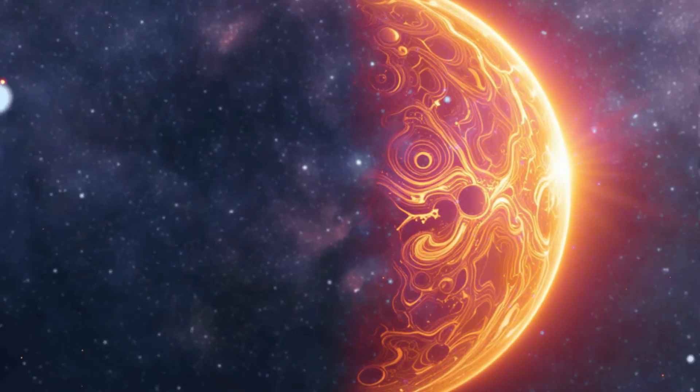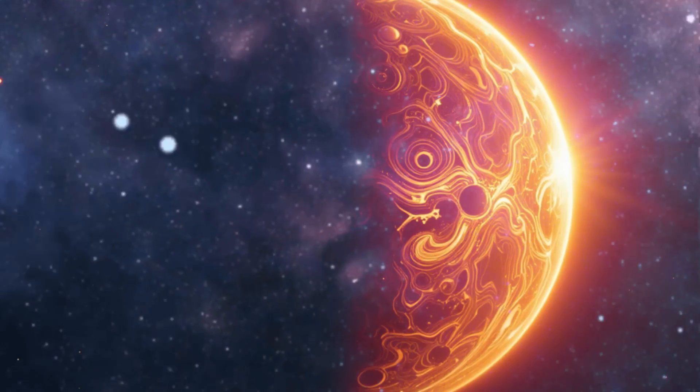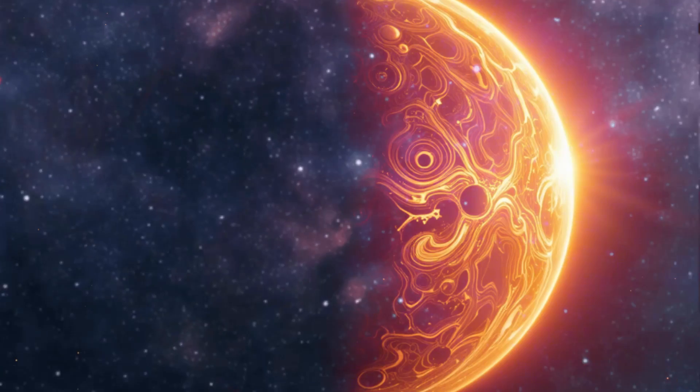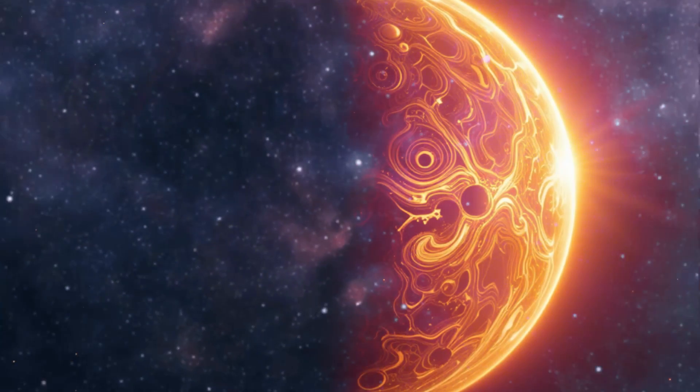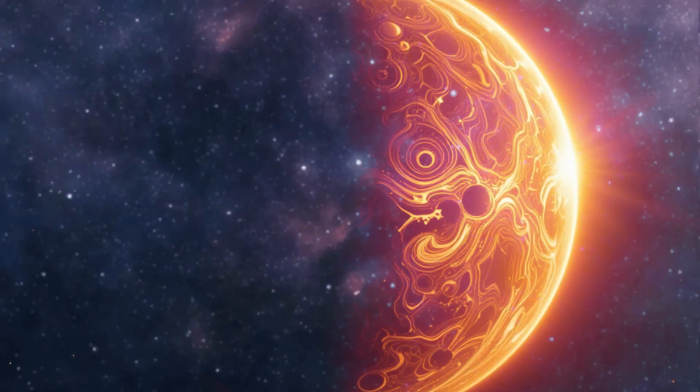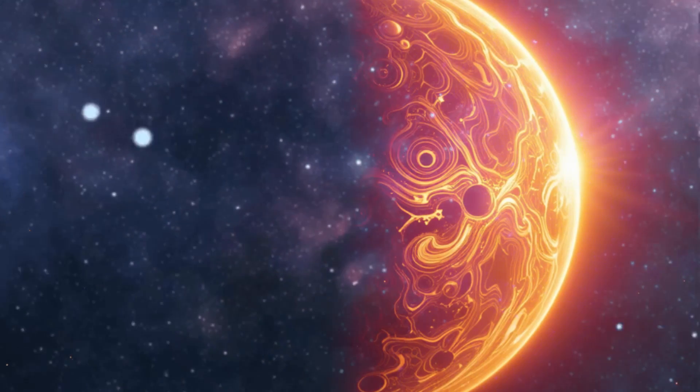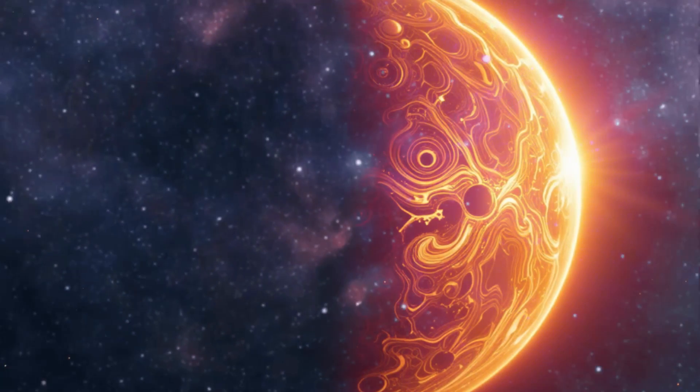These findings are vital in understanding the broader dynamics of the universe. Without these stabilizing forces, the solar system would be a much more chaotic and unstable place. Objects like Pluto could potentially collide with other celestial bodies or be ejected from their orbits, leading to a cascade of disturbances throughout the solar system.